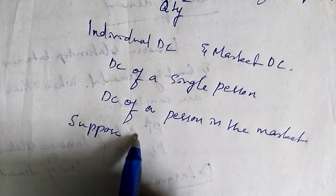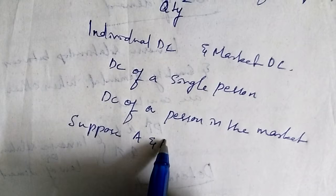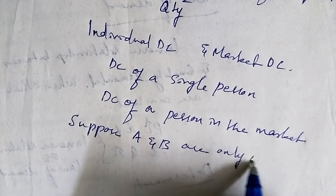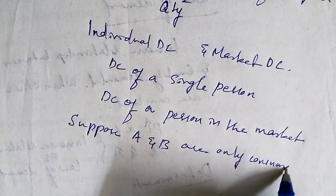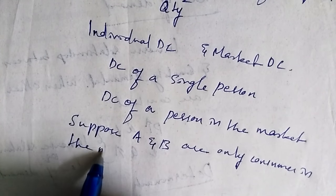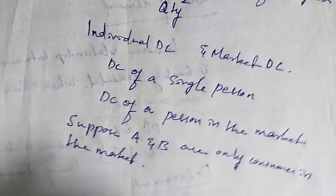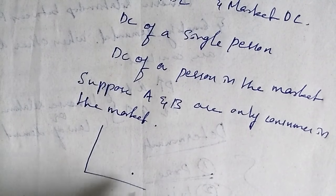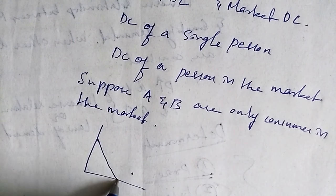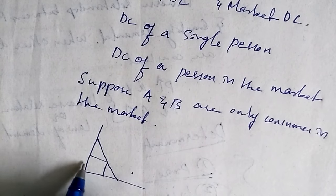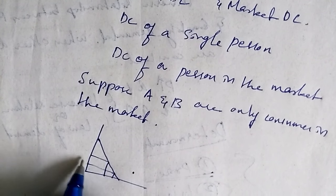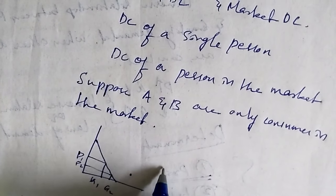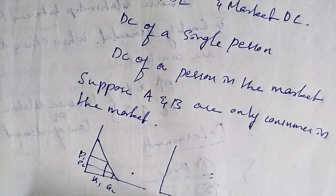Suppose A and B are the only consumers in the market. Then demand curve of A is an individual demand curve P1, P2, Q1, Q2, and demand curve of B